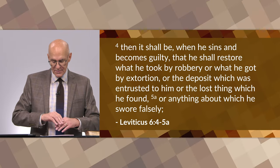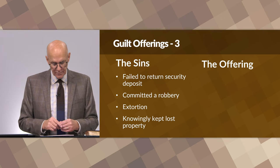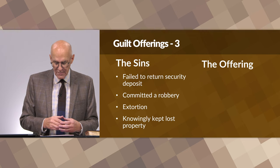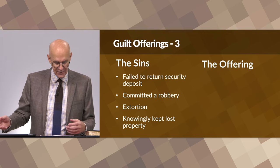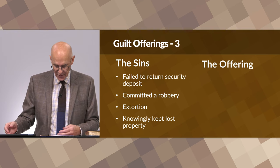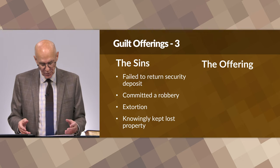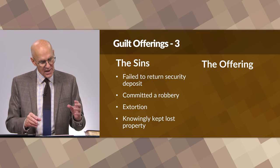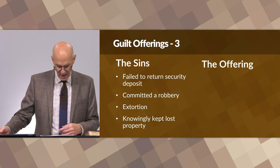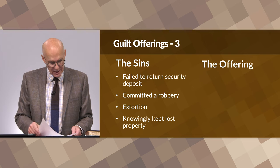The passage describes how one can take another's property sinfully and unlawfully. He may have held another's goods as a deposit or security but failed to give it back — that's one form of theft. Or he took something by robbery, by extortion or threatening, or he found something lost by another and kept it without reporting it, or he lied about its recovery by swearing falsely to cover the theft.